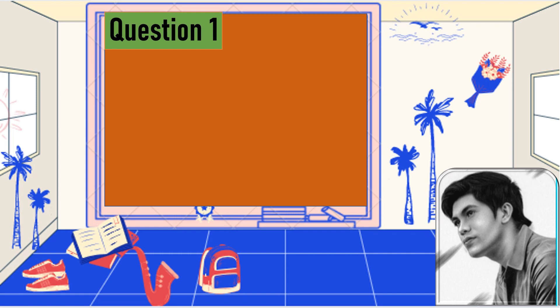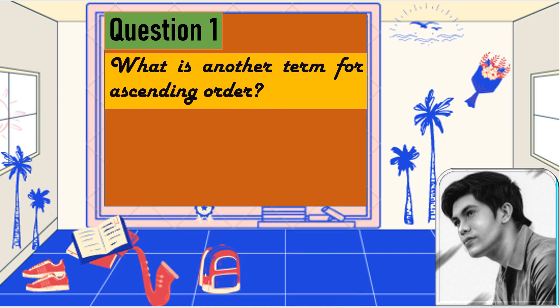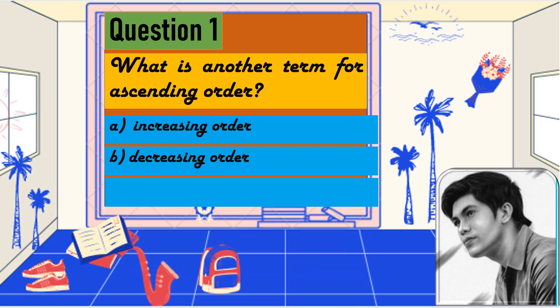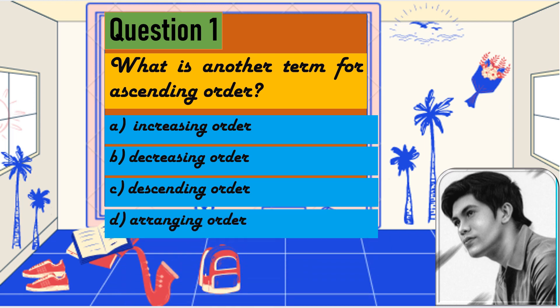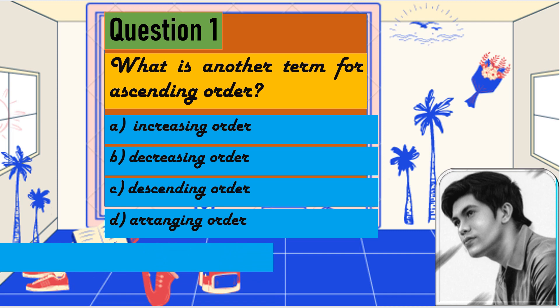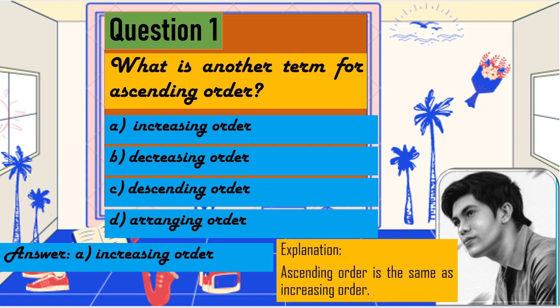Question 1: What is another term for ascending order? A — increasing order, B — decreasing order, C — descending order, D — arranging order. The correct answer is A, increasing order. Ascending order is the same as increasing order based on the definition we discussed.